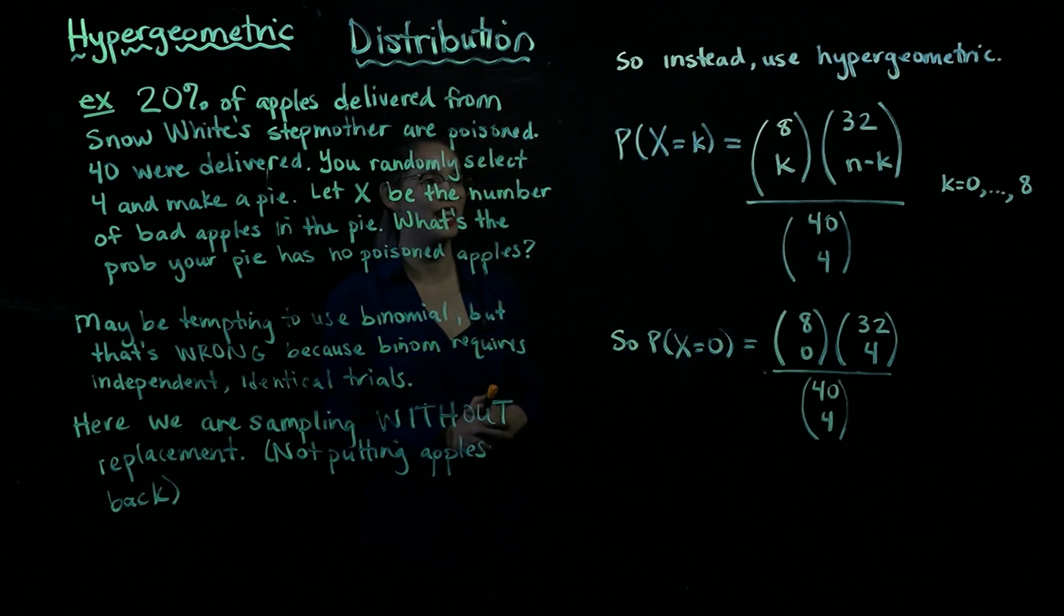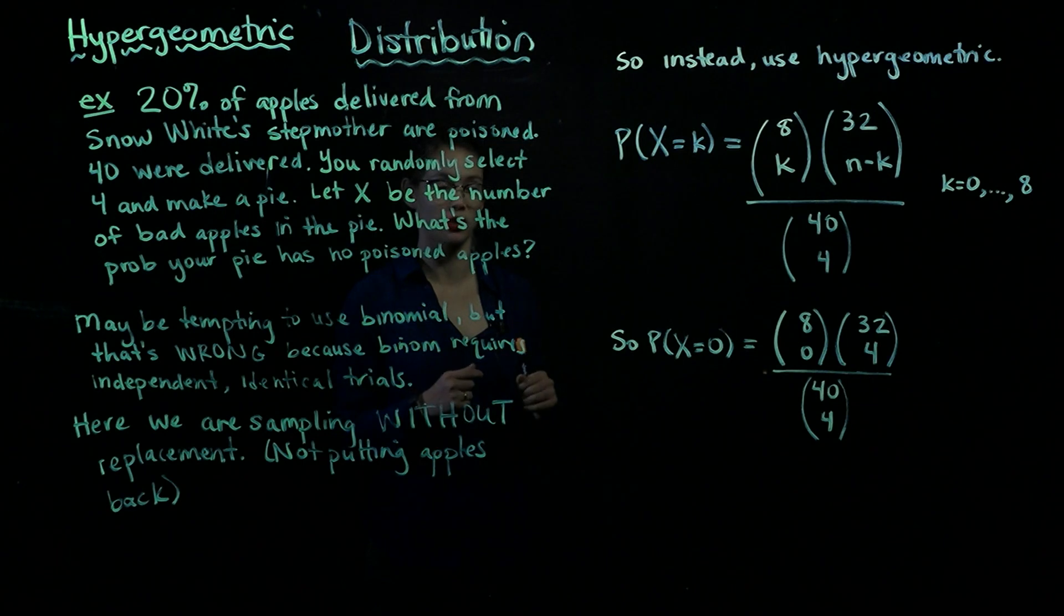So this is going to be good for k equals 0 poisoned apples all the way up to 8 poisoned apples. All right, so that's going to be our general form.